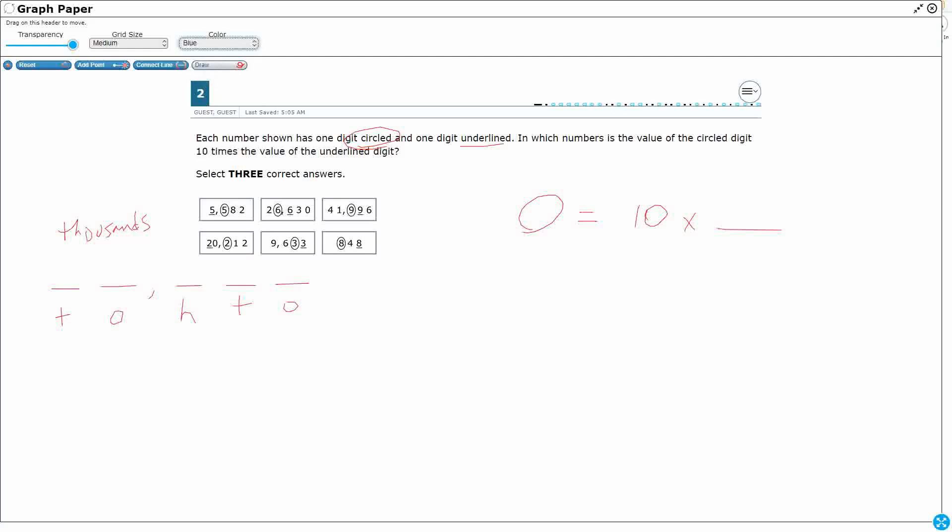Watch what we can do here. So let's build first our 5,582. Remember, it says we need to find the numbers in which the value of the circled digit is 10 times the value of the underlined digit. So this is underlined. This is circled. So let's plug these in over here. So the value of this 5 right here, this is a 5 in the thousands. So this is going to be 5,000.